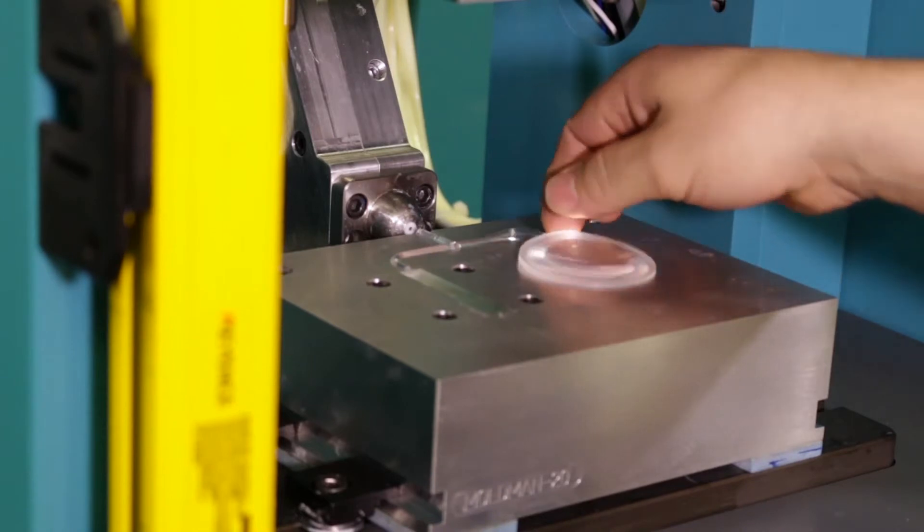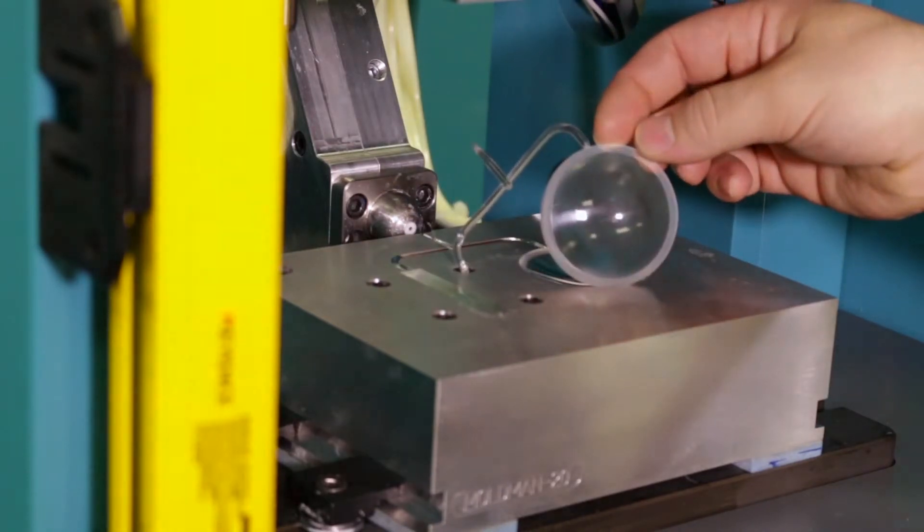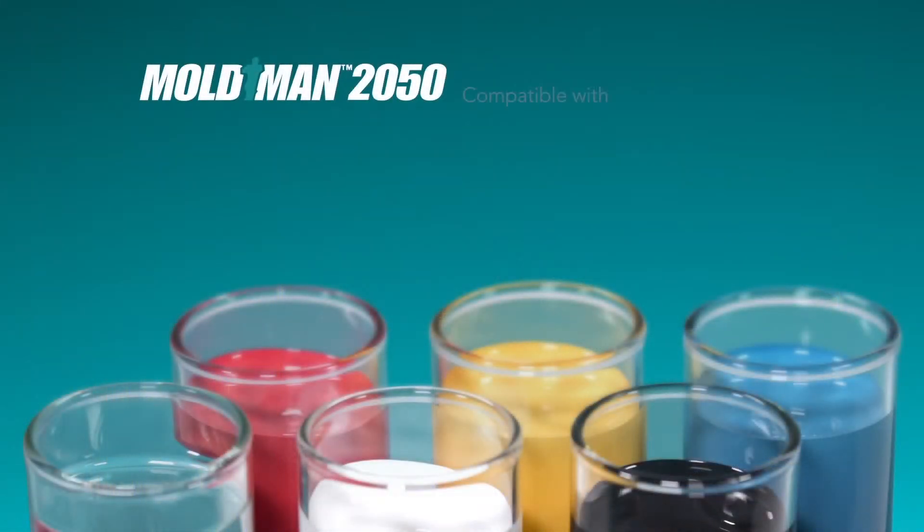Molded products are ready to be handled and tested in seconds. The Moldman 2050 is compatible with specific one-part or two-part molding materials, including silicones distributed from cartridge or bulk material packaging.